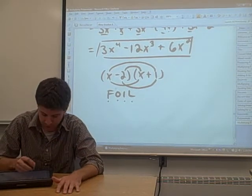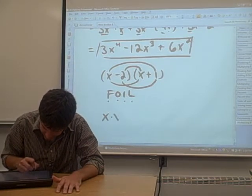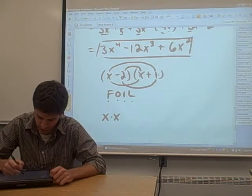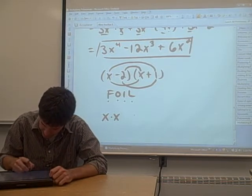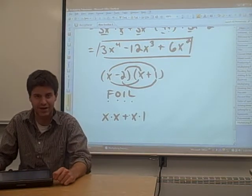So, let's actually do this. Let's start with F. We're going to multiply the first two terms together. That's x times x. Then you look at the two outer terms. In this case, the outer terms are 1 and x. We're going to multiply those together. x times 1. And we're going to add.